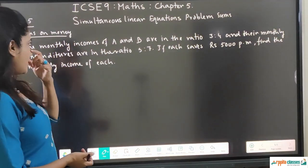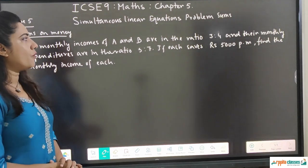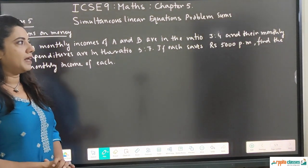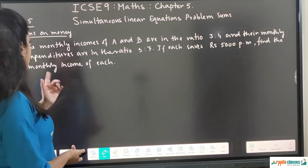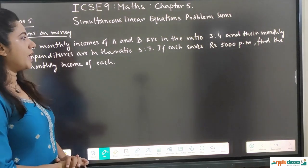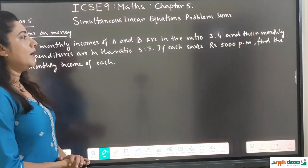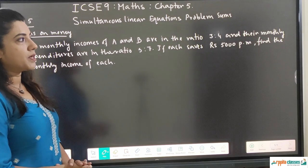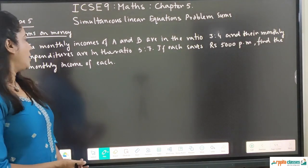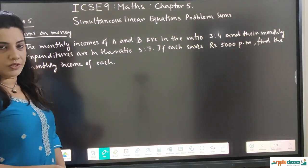The first question: the monthly incomes of A and B are in the ratio 3 is to 4, and their monthly expenditures are in the ratio 5 is to 7. If each saves rupees 5,000 per month, find the monthly income of each.